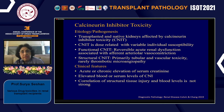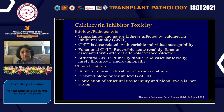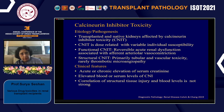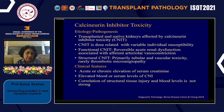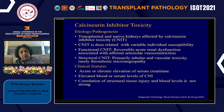CNI toxicity in transplanted and native kidneys is dose-related with variable individual susceptibilities. Functional toxicity is reversible, even though acute kidney dysfunction is associated with afferent arteriolar vasoconstriction. The structural part of CNI toxicity is primarily tubular and vascular toxicity, and sometimes thrombotic microangiopathy. Clinical features are non-specific — acute or chronic elevation of serum creatinine. Elevated blood levels of CNI are often documented, and correlation with structural tissue injury is strong in some studies.